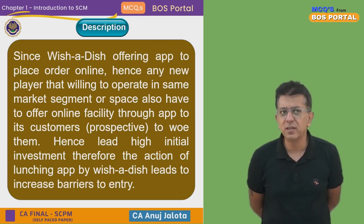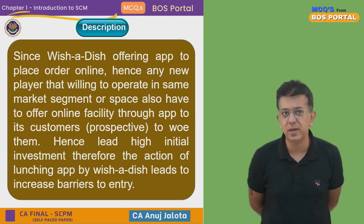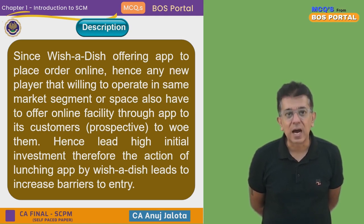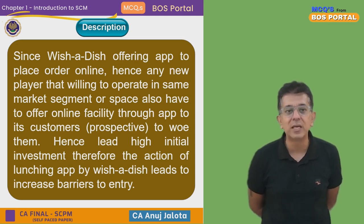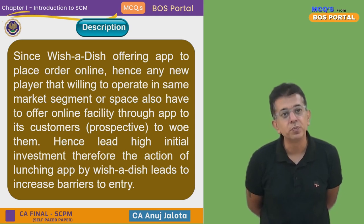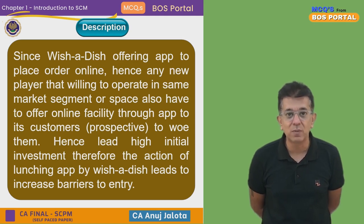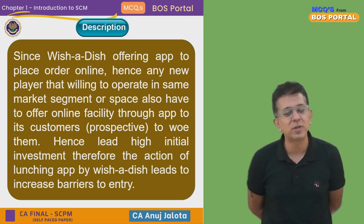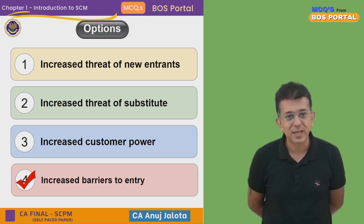Reading the description: since this company is offering an app to place orders online, any new player willing to operate in the same market will also have to offer this online facility through an app to attract customers, hence leading to high initial investment. Therefore, the action of launching the app by Wish a Dish will lead to increased barriers to entry. Any new entrant will have to invest more in such a facility, requiring significant capital investment — so there will be more barriers to entry. Out of the four options, the last one is the correct answer.